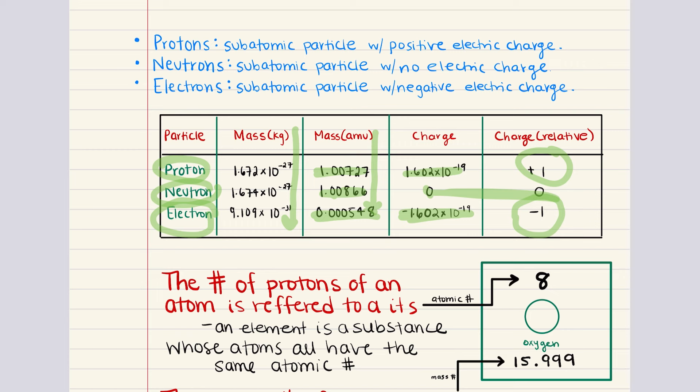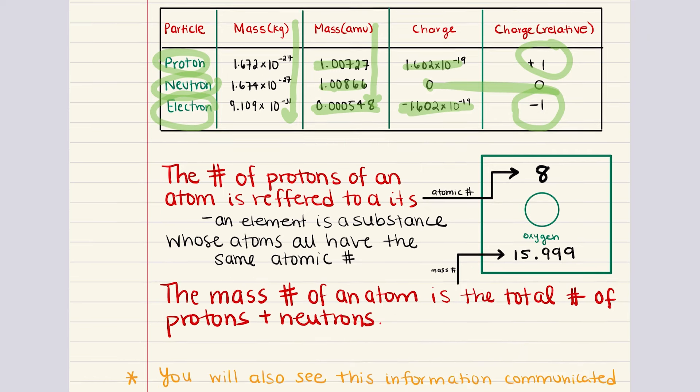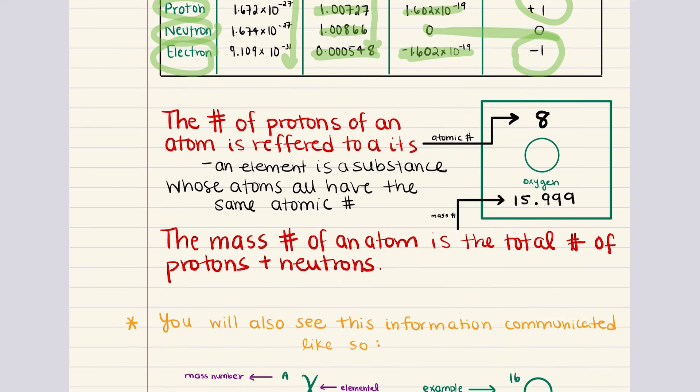Taking that into consideration, let's talk about a couple of important terms related to the atom as a whole. Atomic structure is defined based on three critical numerical descriptors: atomic number, mass number, and atomic weight. Let's focus on atomic number and mass number for right now.